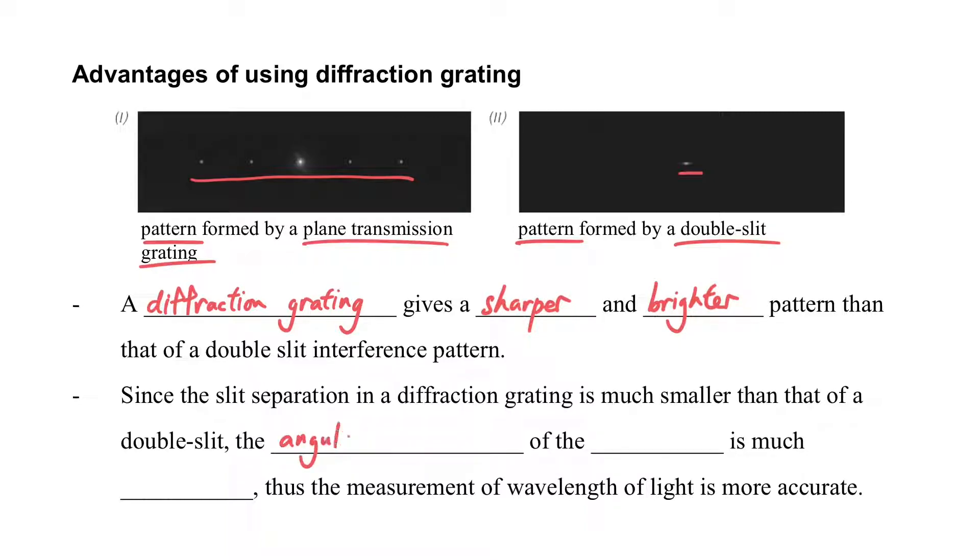And because of this, we can have a larger angular separation. What is the angular separation? It means the angle theta. As we have calculated many times, the angle theta - this is the angular separation.